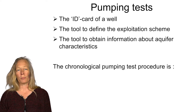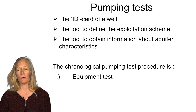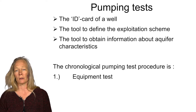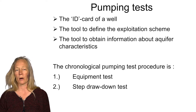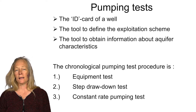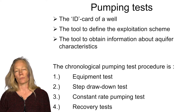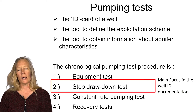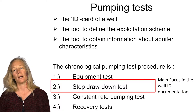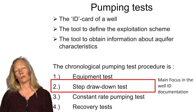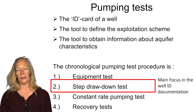The chronology of pumping tests mostly starts with an equipment test, which allows us to design the step drawdown test. This consists of at least four different pumping rates, leading over to the constant rate pumping tests and the recovery test. In the well ID documentation procedure, the main focus is on the step drawdown data, since this will allow us to calculate the safe exploitation rate of the well.